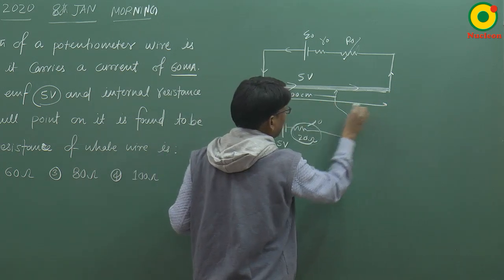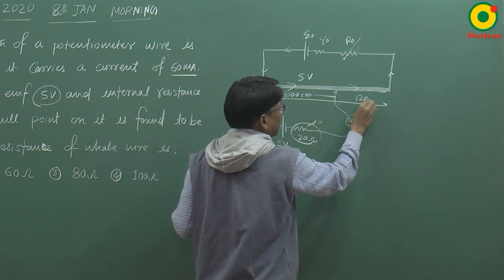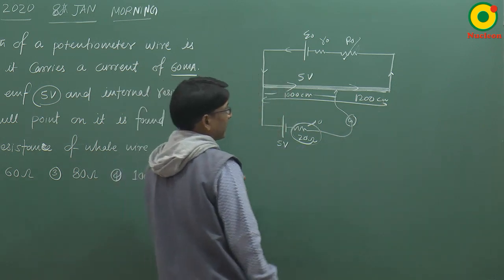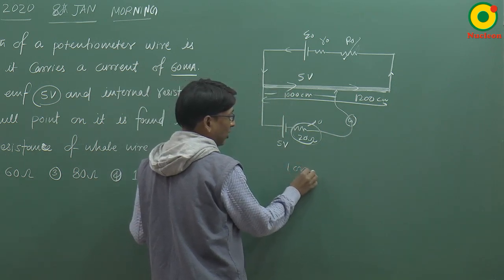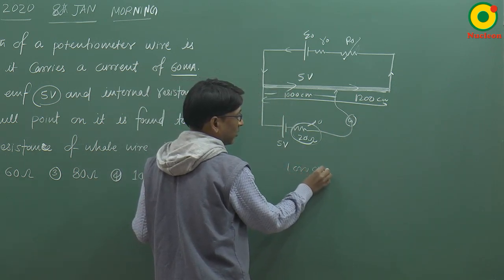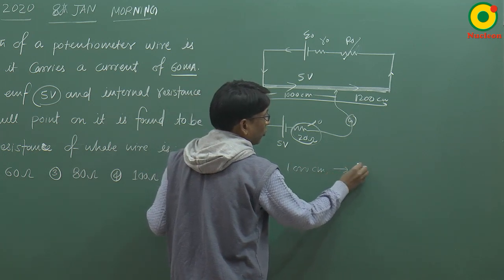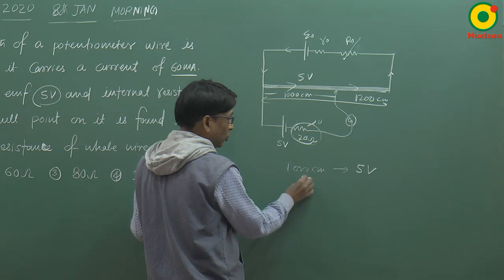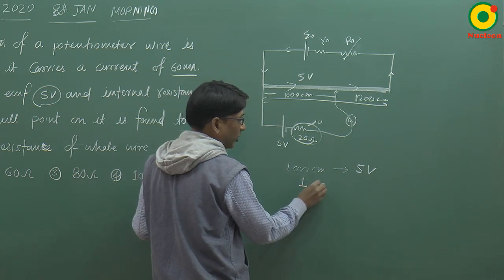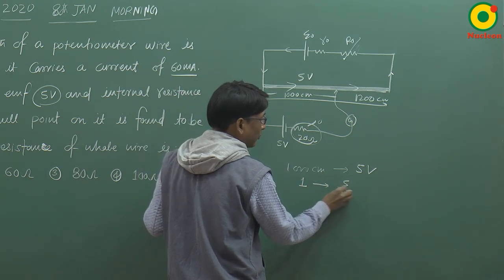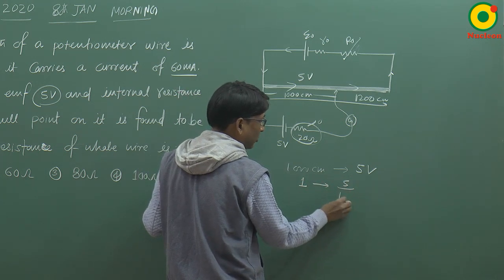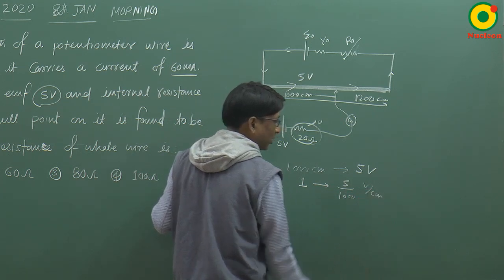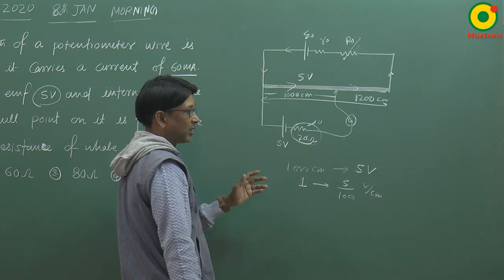Total length बताया गया है 1200 centimeter। तो ऐसे समझ सकते हैं कि अगर 1000 centimeter पर 5 volt के बराबर potential difference है, तो 1 centimeter पर कितना potential difference होगा — 5 by 1000 volt per centimeter। इसको कहते हैं potential gradient — voltage या potential difference per length।